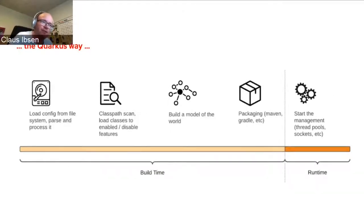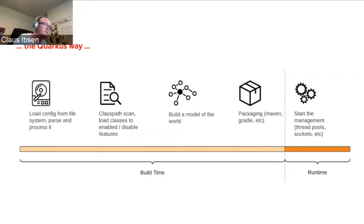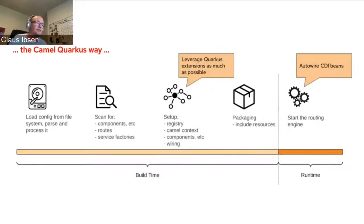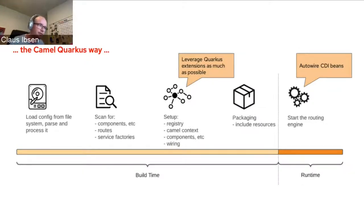What Quarkus brings to the table is moving some of that work to build time. You can tell Quarkus to load configuration files and do classpath scanning ahead of time, building an intermediate model. Then at runtime, it's much quicker to bootstrap and run. From the Camel point of view, what we do is scan for components available on the classpath, additional Camel routes, and factories for bootstrapping and wiring. That's a fantastic way of starting up Camel quicker.